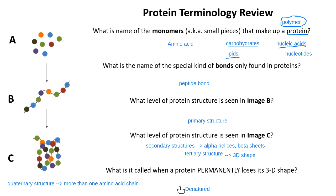This last question is what I call an underline-highlight-star word — do whatever you need to in your notes to remind yourself it's important. The word is denatured. When a protein becomes denatured, it has permanently lost its shape, and the emphasis is on permanently, because we know about lots of proteins that change their shape.